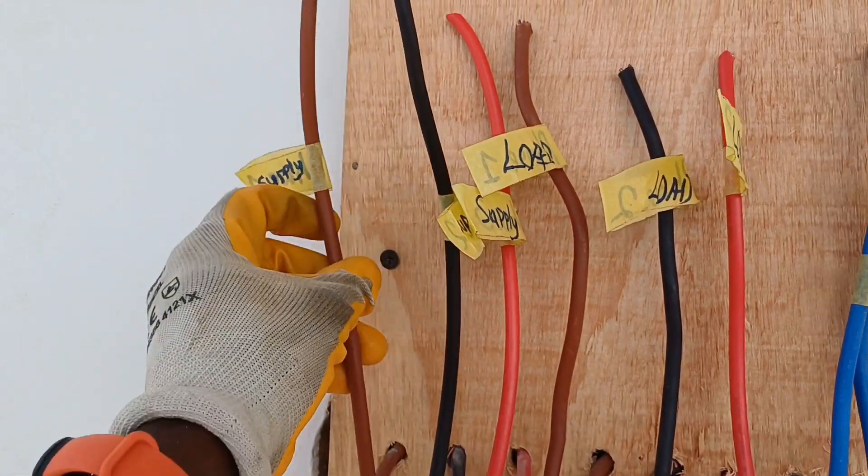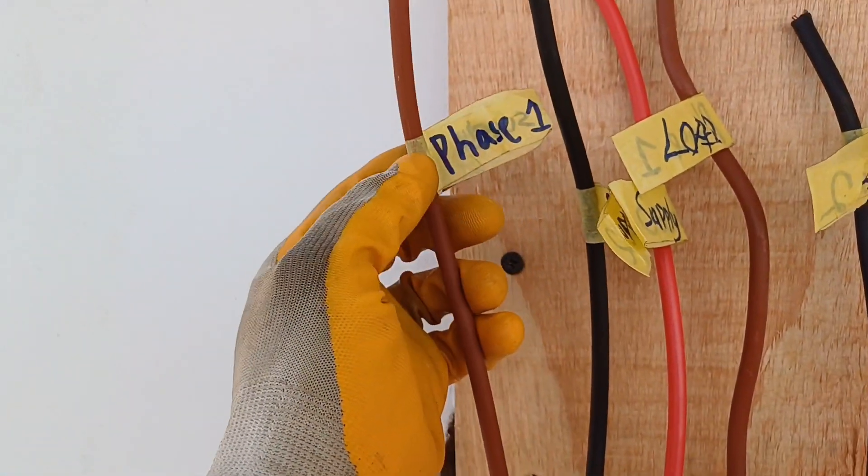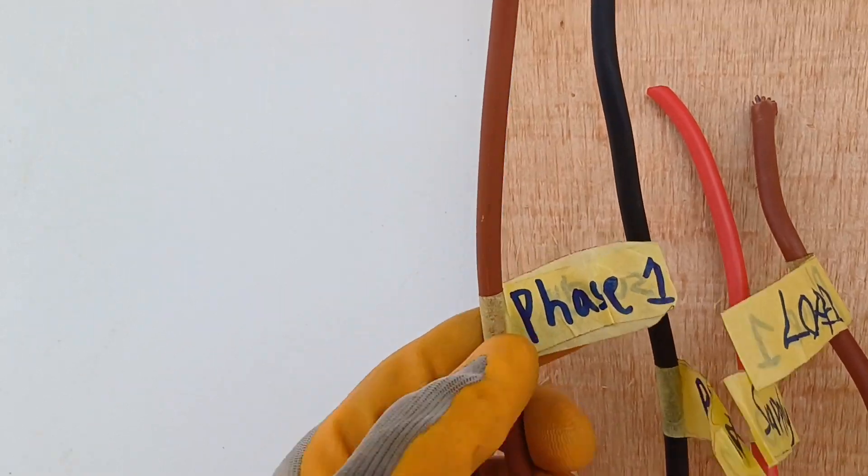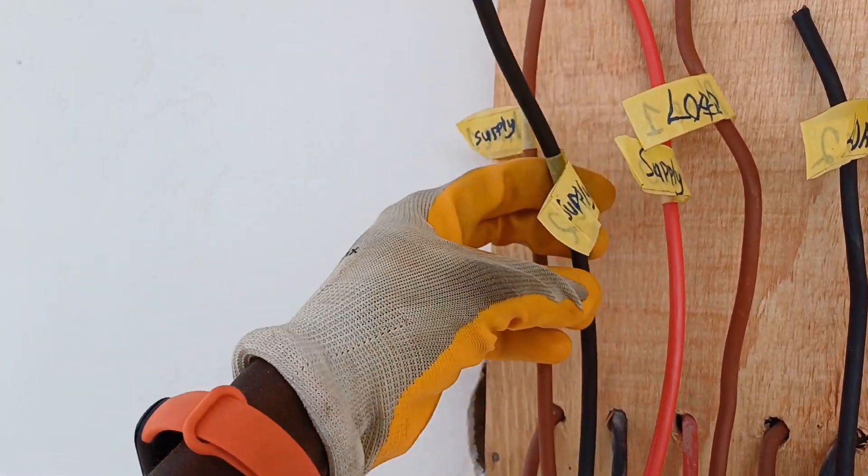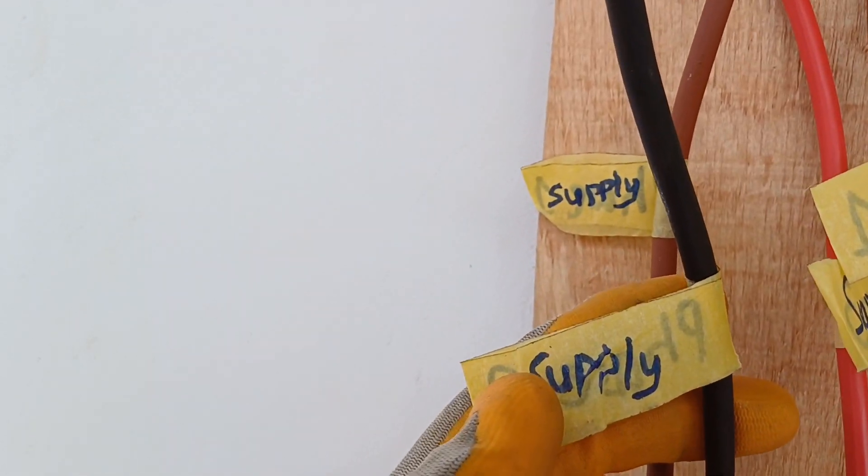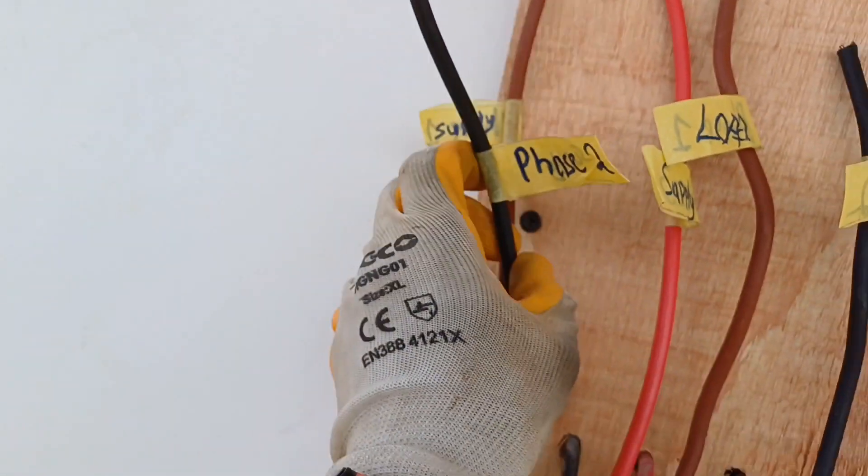This you can see here is supply from the ECG pole, phase one from the ECG pole. And this is also supply, phase two from the ECG pole.